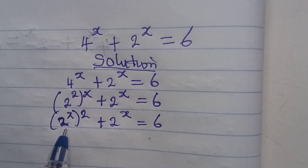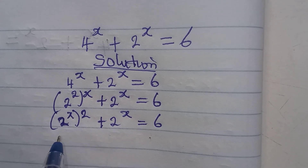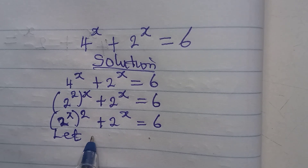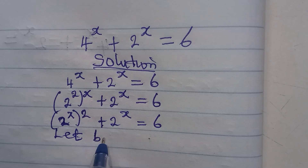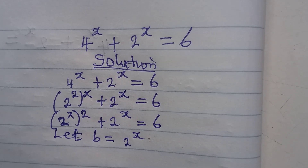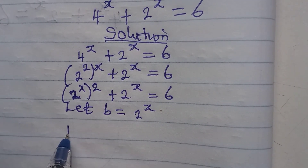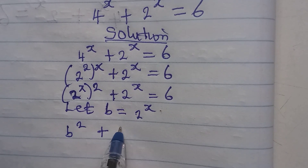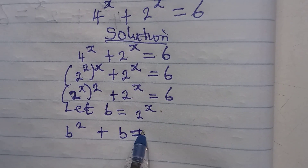If you look at this, we have 2 to the power of x appearing twice. So let's replace it with a letter — let b equal 2 to the power of x. That means in place of those terms, we have b squared plus b, and this equals 6.